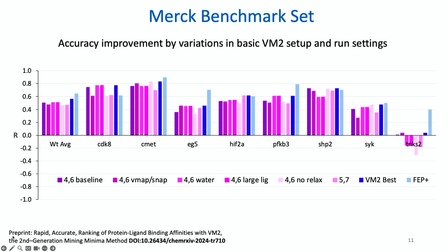Because it is so fast, we suggest that if users have a validation experimental data set, they should try some basic tuning of the input parameters. The baseline is what I just showed. We can include crystallographic waters in the binding site, adjust how we set up and relax the active site, and make the cutout bigger. VM2 is fairly stable to all these changes, but there are a few meaningful improvements here and there, which drives up the weighted average — now fairly close to FEP+.